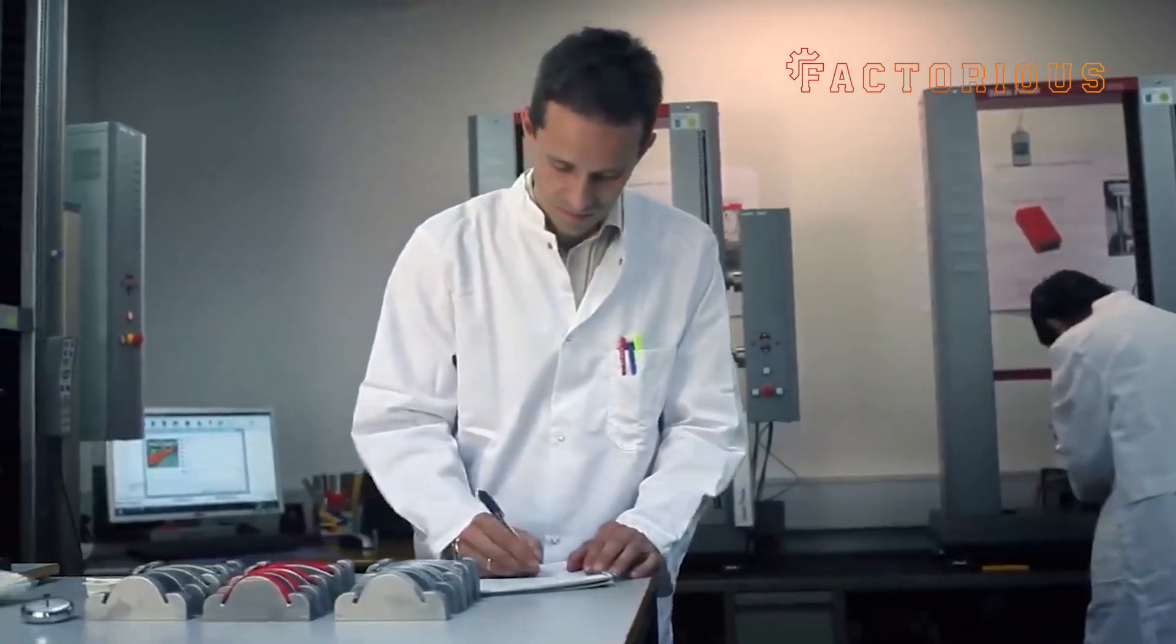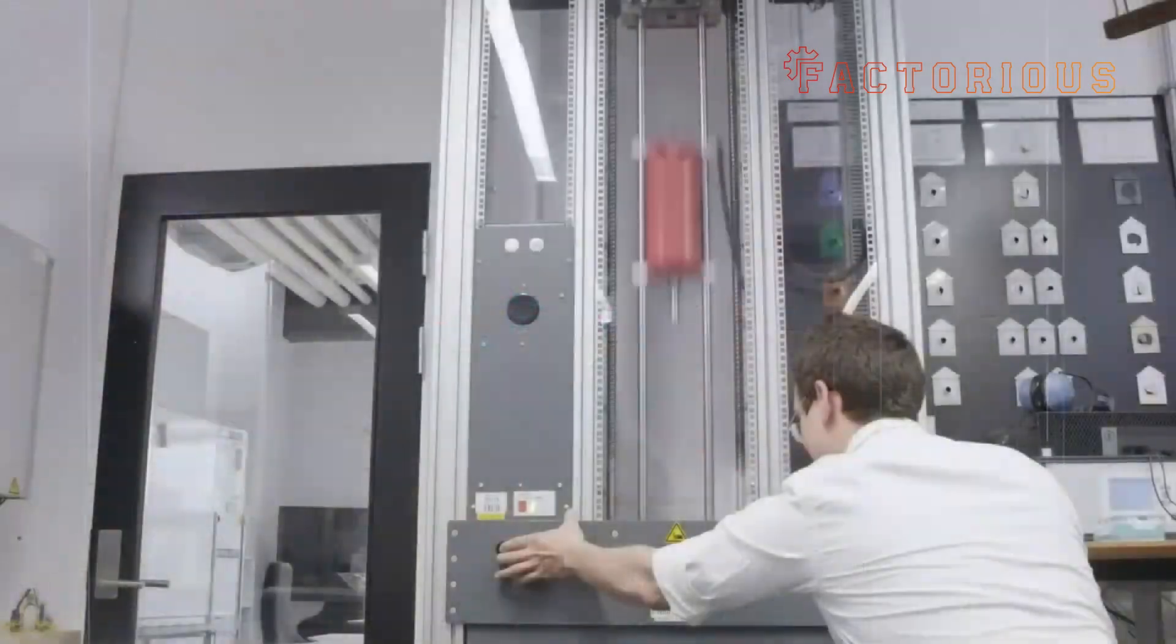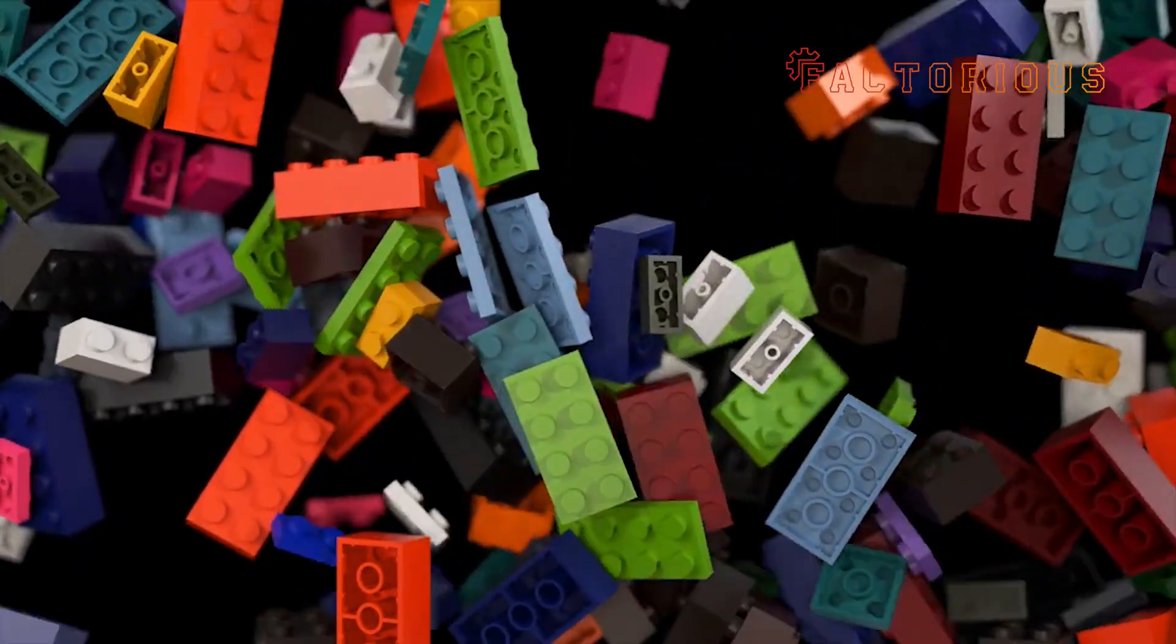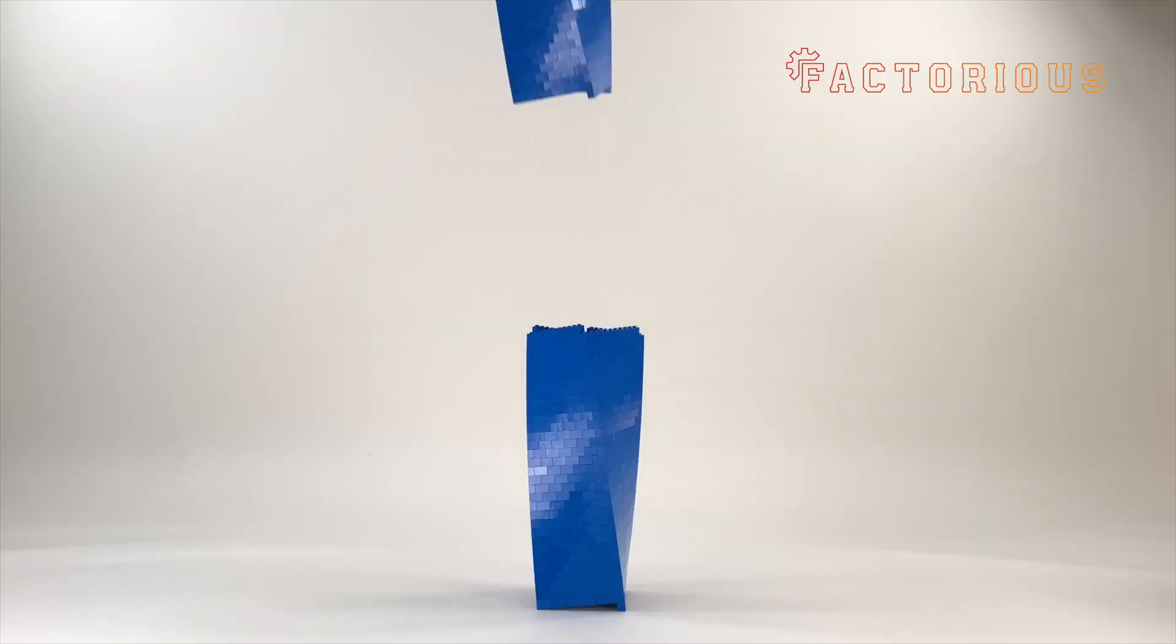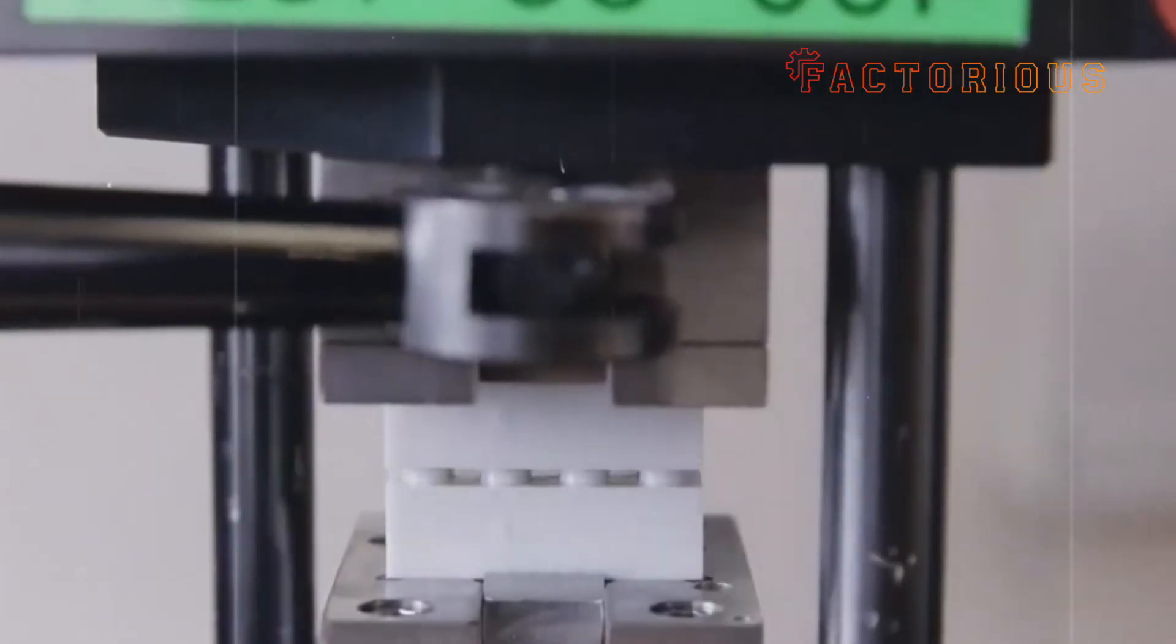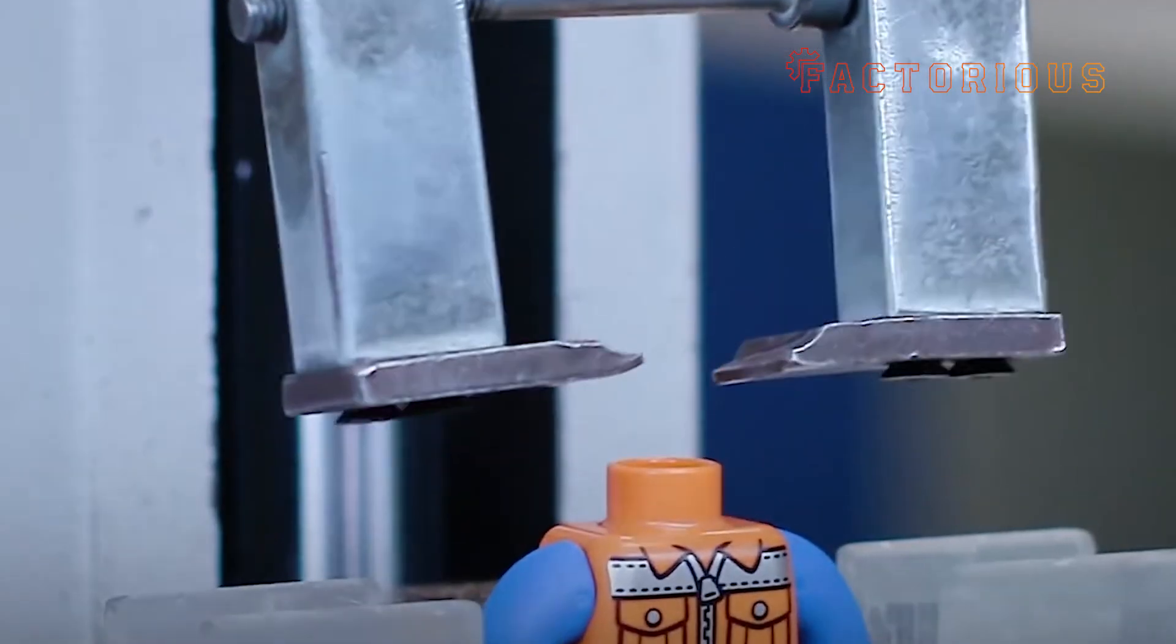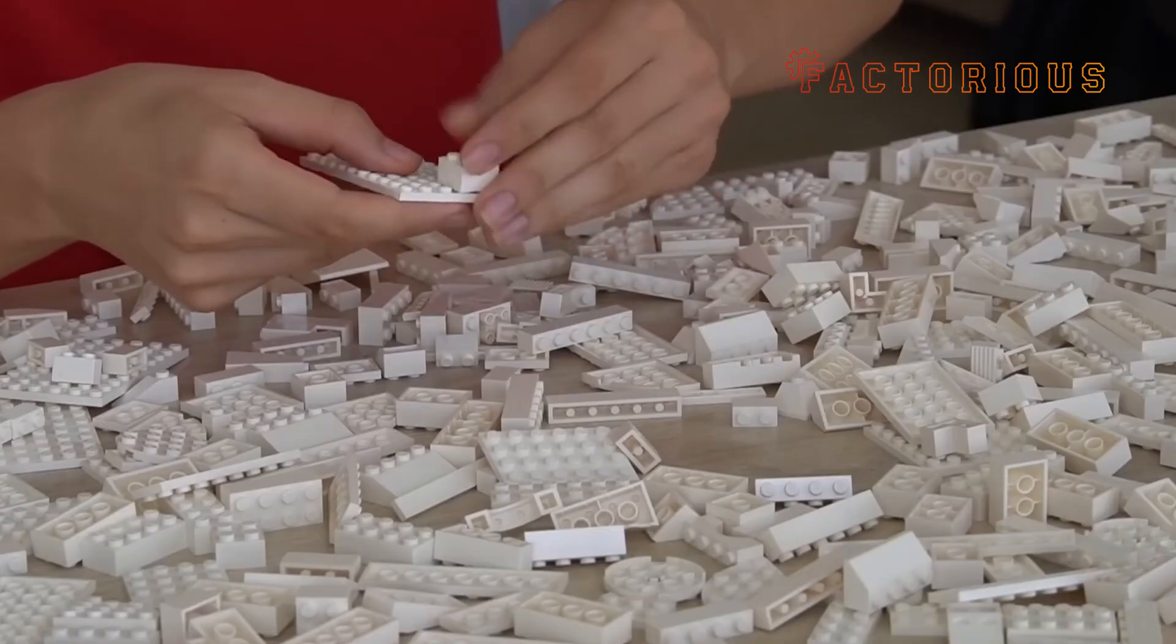Every Lego factory is filled with automated testing labs that check for the tiniest flaws. Bricks are measured by high-resolution laser scanners that can detect deviations smaller than the width of a human hair. Others are subjected to stress tests. They're twisted, squished, and even baked at high temperatures to make sure they don't warp or crack. There's even a special test just for the clutch power, which is that satisfying snap when two bricks lock together. Robots repeatedly attach and detach bricks to ensure they click perfectly, hundreds of times without losing grip. And if the clutch feels even slightly off, that batch doesn't make it to shelves. Lego's engineers literally adjust molding temperatures and pressures until the click is just right.